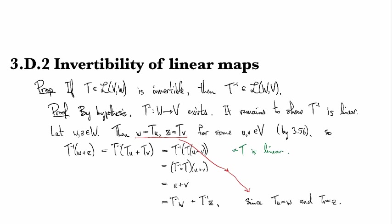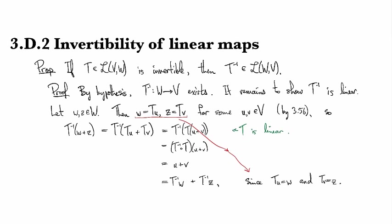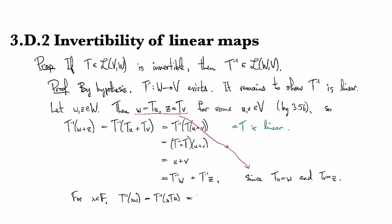Okay, so then for scalars, it's the same thing, or the same order of operations. So we have T inverse of lambda W, and then we swap out our expression for W as T(u). And then we use the fact that T is linear to rewrite it as T of lambda u, and then the T's cancel. And then we can use the fact again that u is T inverse of W.